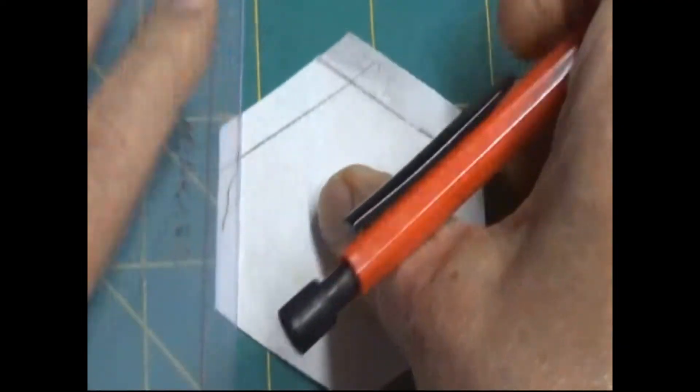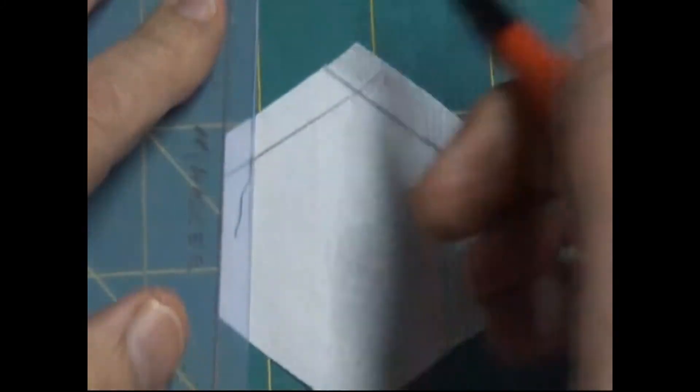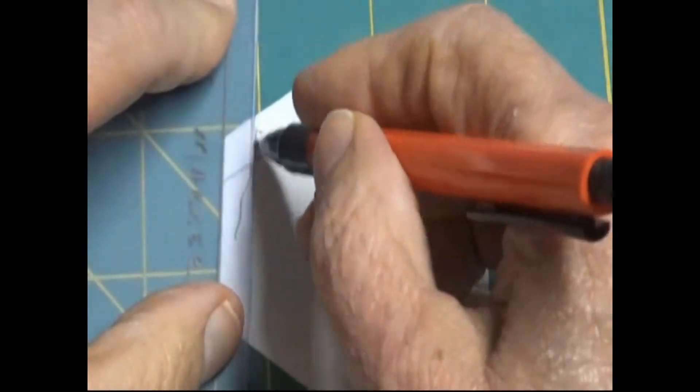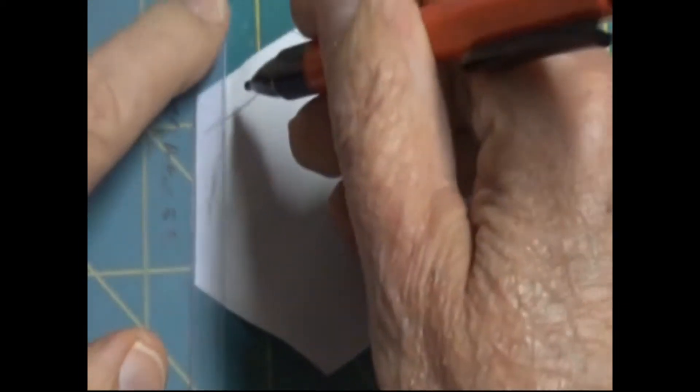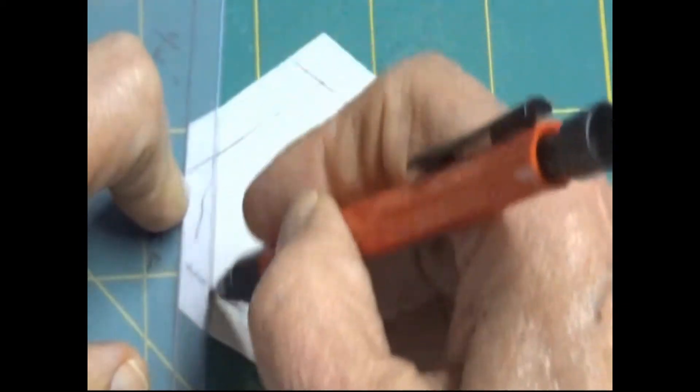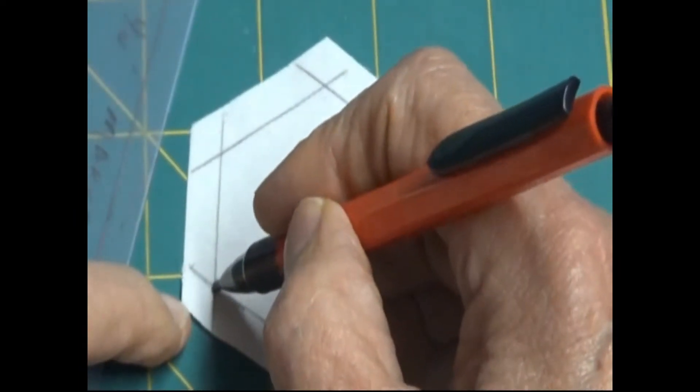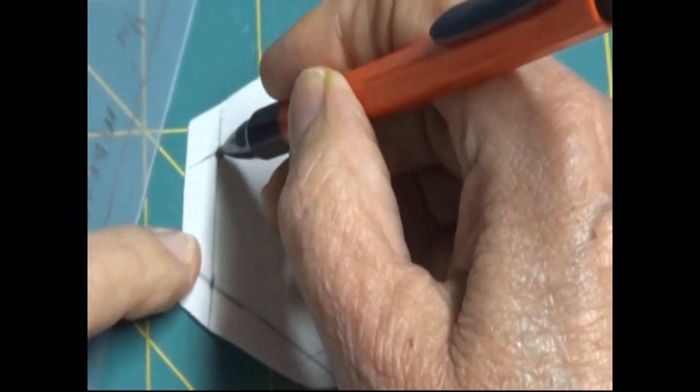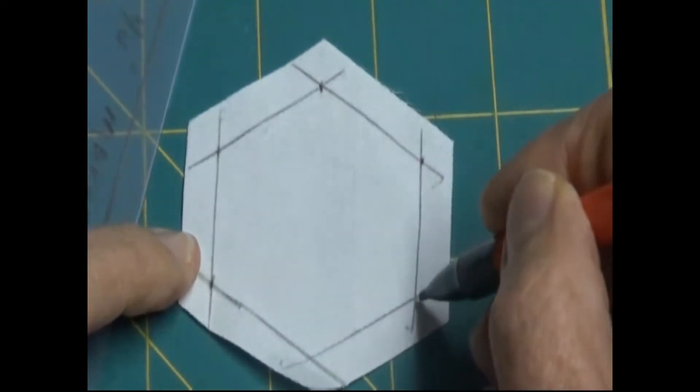Lay it on your edge of your hexagon. What this does is this is making you a quarter inch sew line all the way around your hexagon. I'm drawing my lines. You will start sewing at the intersection. See where these intersections are. And you will stop sewing at these intersections.